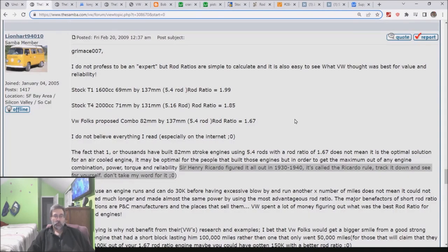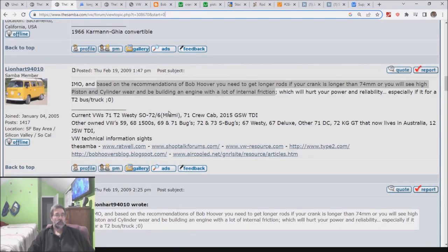Over here at the Samba we've got somebody who says Sir Henry Ricardo figured it all out in 1930-1940. It's called the Ricardo rule. This guy continues based on the recommendations of Bob Hoover, you need to get longer rods if your crank is longer than 74mm or you will see high piston and cylinder wear.